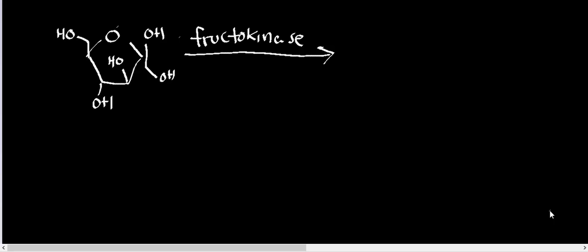Of course, if you did phosphorylate at the sixth position, you'd have fructose 6-phosphate, and that would just enter glycolysis at fructose 6-phosphate. But normally, fructose will react with fructokinase.